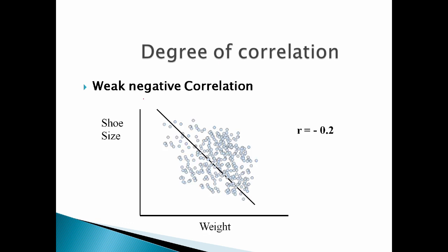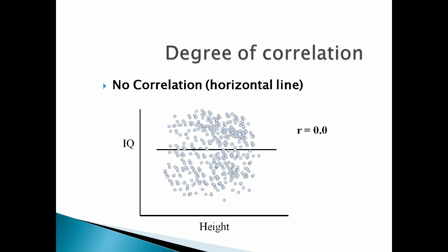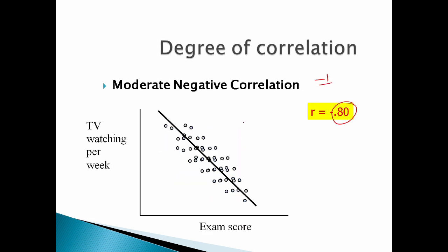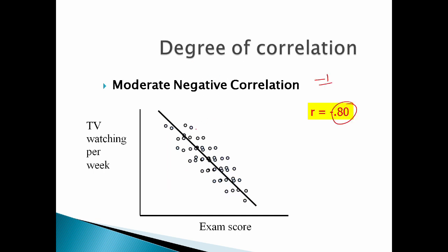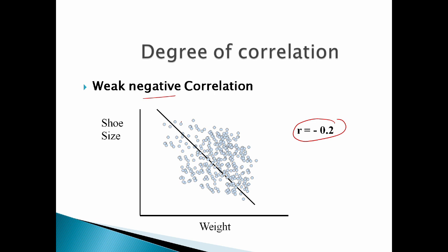Next, weak negative correlation: R is equal to minus 0.2, so correlation is less. If you observe, perfect negative is exactly on the line, moderate negative is not exactly on the line, and weak negative is even less. The width of the scatter around the line increases as the correlation weakens.